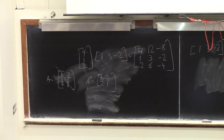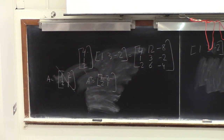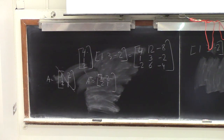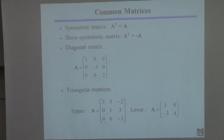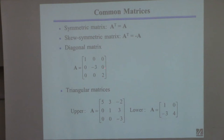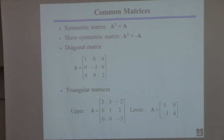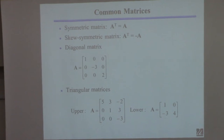A skew-symmetric matrix satisfies A transpose equals minus A. A diagonal matrix has all zeros except along the main diagonal. An upper triangular matrix has zeros below the diagonal — only elements on and above the diagonal can be non-zero. Conversely, a lower triangular matrix has zeros above the diagonal. These must all be square matrices.